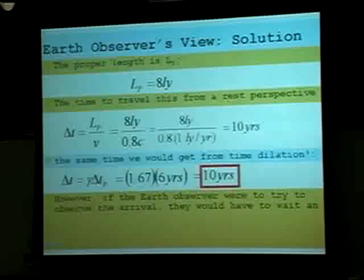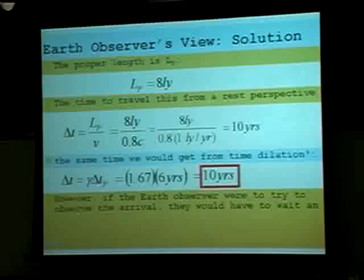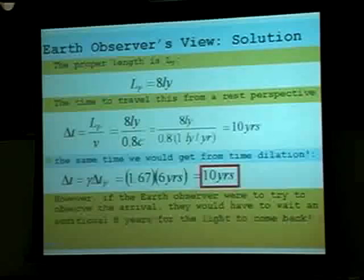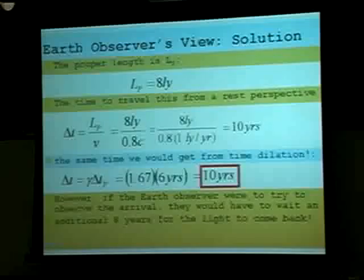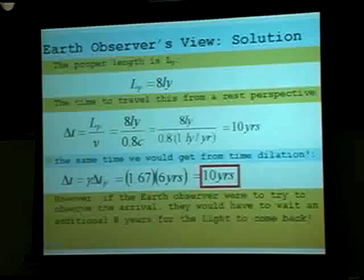If the Earth observer were to observe the astronaut's arrival — let's say the astronaut took 10 years to get there, and as soon as the astronaut arrived they sent a signal back to Earth saying 'I'm here' — the Earth observer would have to wait an additional 8 years for that signal to come back at the speed of light. So if you were the Earth observer, you wouldn't know the astronaut got there for 18 years, because it would take the astronaut 10 years in your time frame to get there, and 8 years for the signal to get back. The astronaut actually got there in 6 years of their own time.